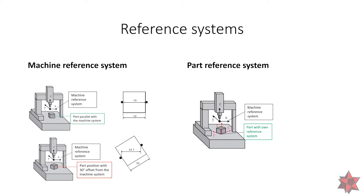But if we use the reference system on the part — also known as the alignment — we will have the actual value of the distance that we want to evaluate, which in our case is 50 millimeters.